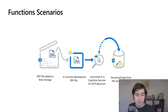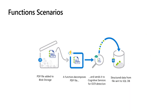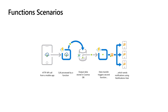When I say event-driven, what I mean is there are triggers — how does this thing start? There are a lot of different scenarios that work with Azure Functions. For example, let's say you have a PDF file you're going to add to blob storage. That could trigger an Azure Function that grabs that PDF file, runs it through cognitive services for OCR, and then puts it into a SQL database automatically. The trigger has an input — the PDF file — and an output — the SQL database entry.